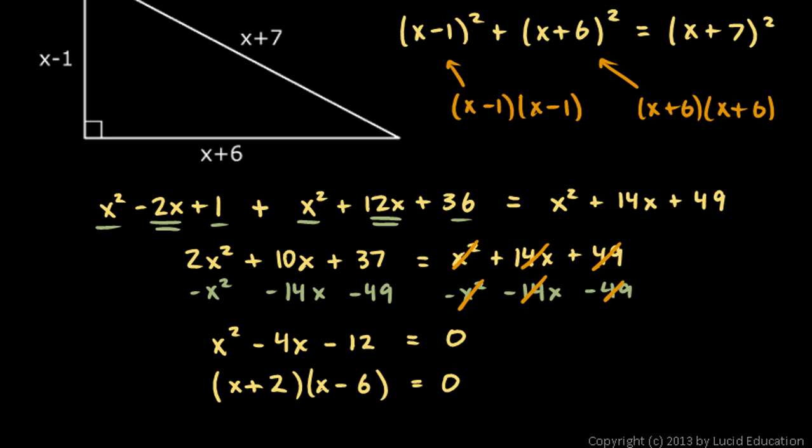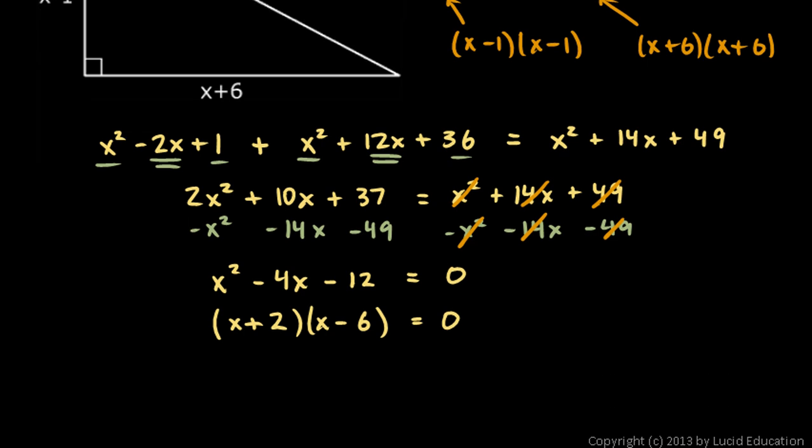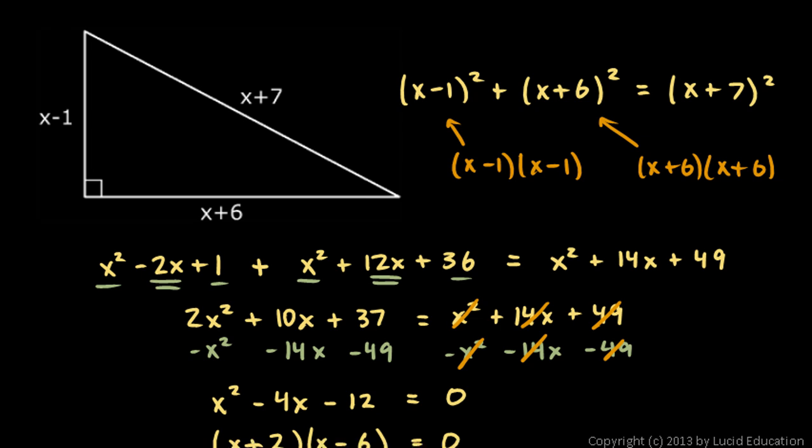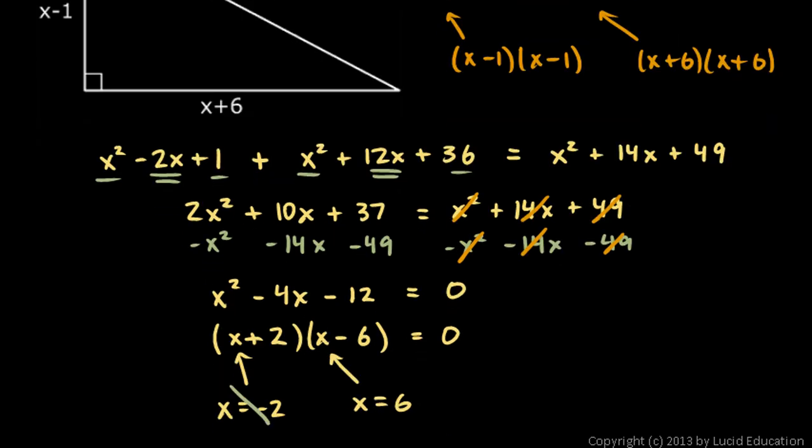So now we can see what x is. What value for x can we put right here to make this equal 0? Well, x could be negative 2. And what value for x could we put right there to make it equal 0? x could be positive 6. So we get two answers. Now look back at the original triangle. If x is negative 2, then x minus 1 is negative 3. And it doesn't make sense to have a side of a triangle that is length negative 3. So this negative 2 answer doesn't really make any sense.